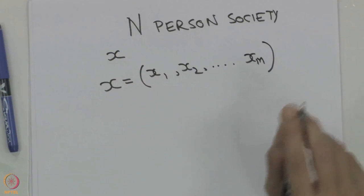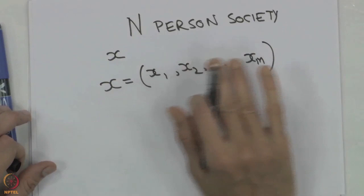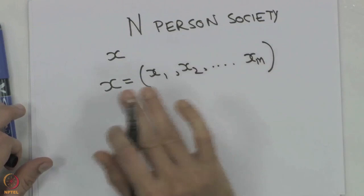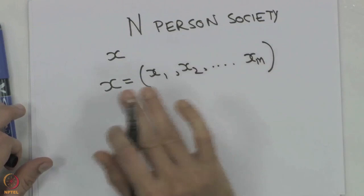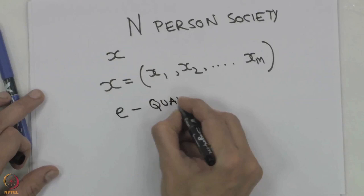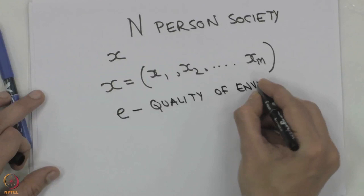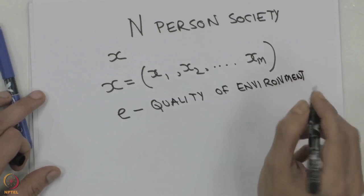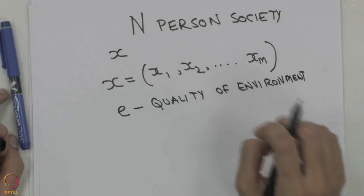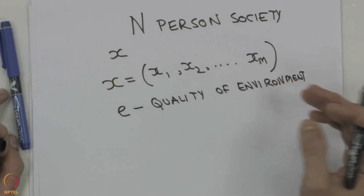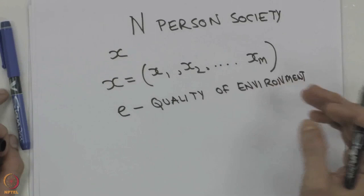Each individual is consuming all of this composite good. In addition, there is an individual state of preferences — how many clothes, how much food, how much entertainment — and then in addition there is E, the quality of the environment. E will actually have multiple attributes: we can talk about air quality, particulate matter, global CO2 emissions, visibility, quality of water, and quality of soil.